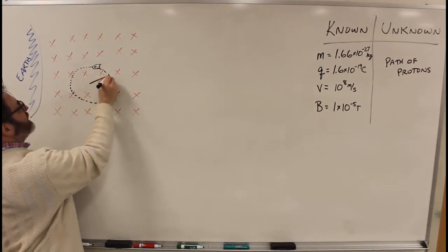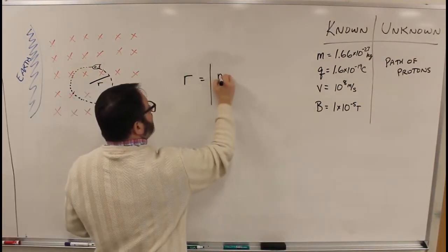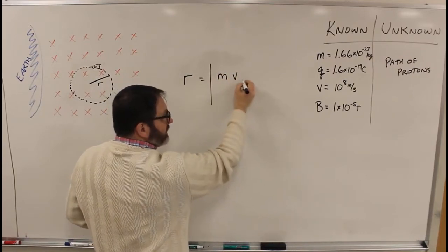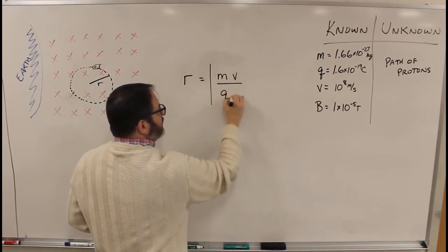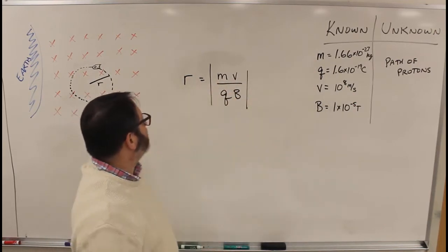We can actually find what this radius is. R is given by m times v over q times B, and these are all the things we've been given.